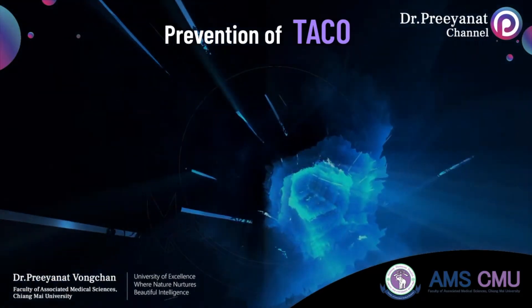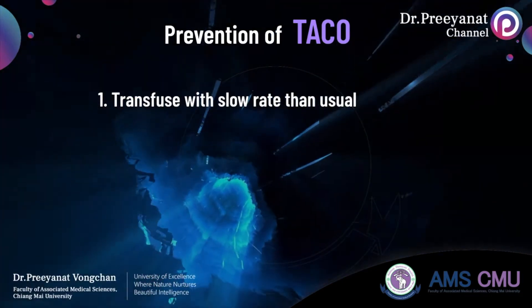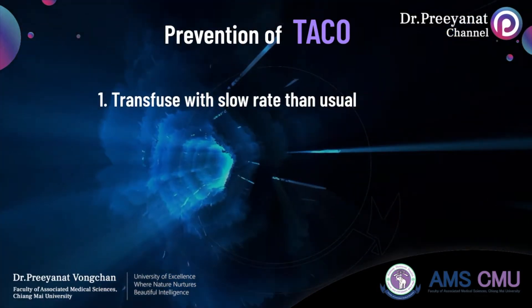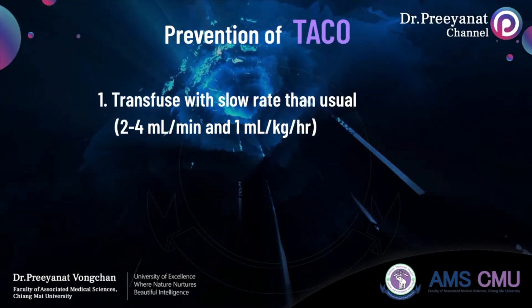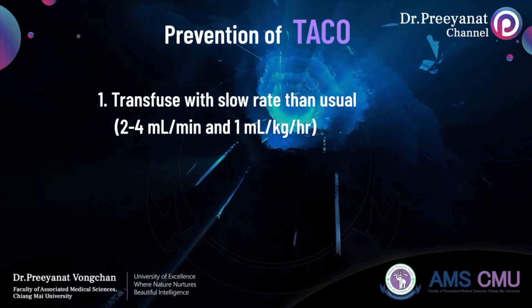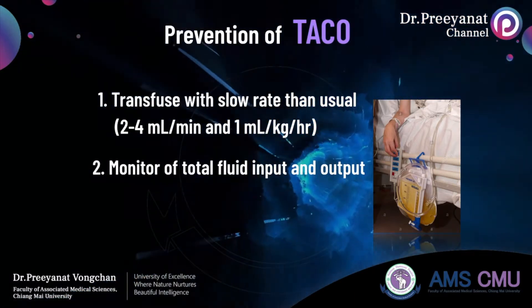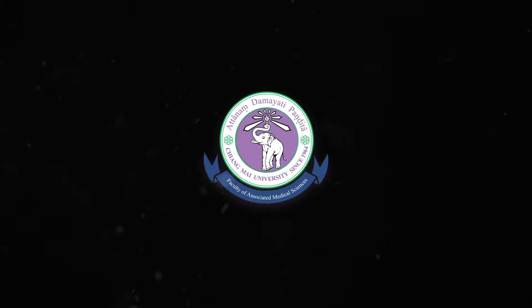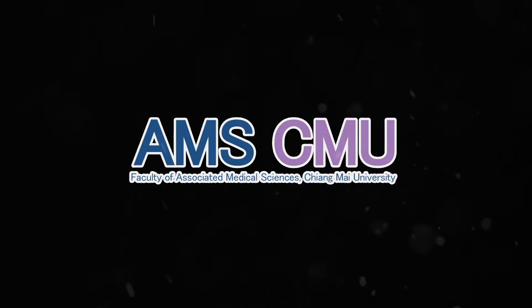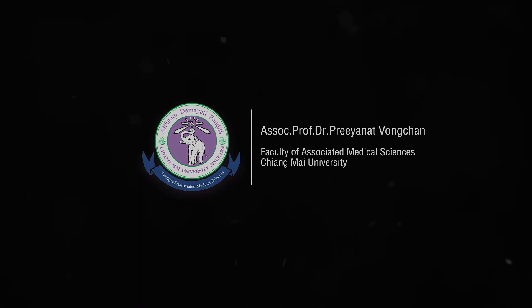In the absence of ongoing and rapid blood loss, blood components should be administered slowly, especially in patients at risk of TACO, including pediatric patients, patients with severe anemia, and patients with congestive heart failure. An infusion rate of 2–4 mL per minute and 1 mL per kilogram body weight per hour are recommended. During transfusion, urine output should be monitored. An alert card should be provided for patients with a history of TACO.